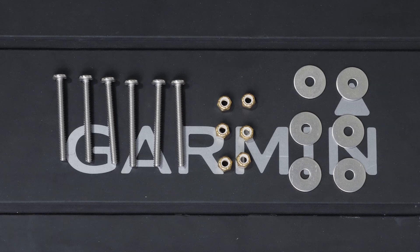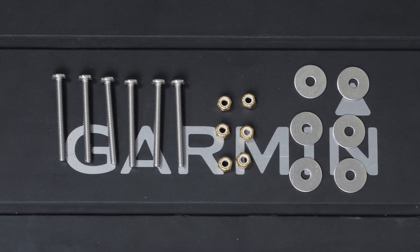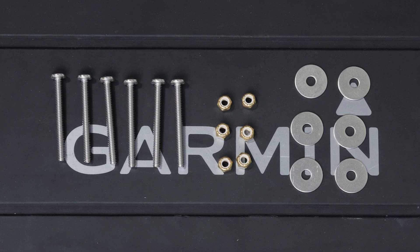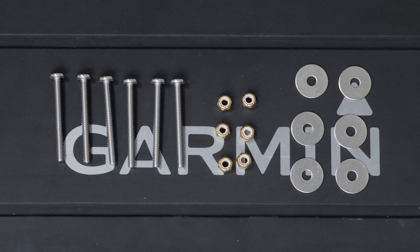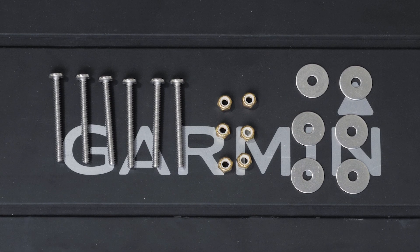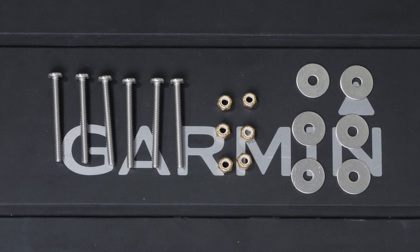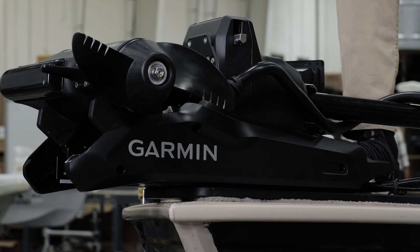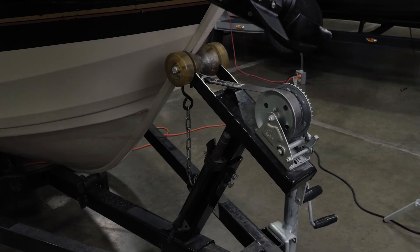Verify the deck is strong enough for the weight and force of the trolling motor. Use a backing plate or reinforce the boat if needed. The motor secures to the deck of the boat using bolts. You must have room to secure the mount from the underside using washers and nuts.